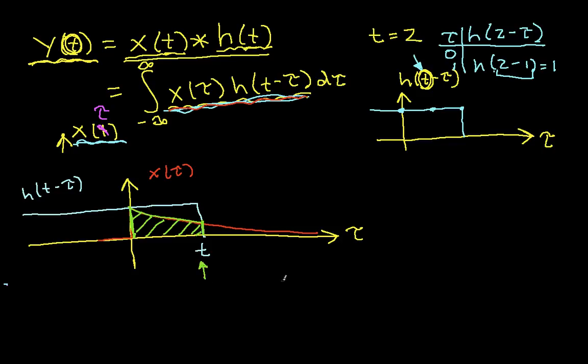For a different value of t, suppose I want to get y of, I'll call it t prime, but now I want to get y of t for a different value of t. Well, my h of t minus tau has changed. Now h of t minus tau looks like this. Now this would actually be h of t prime minus tau. And the product of x of tau and h of t prime minus tau looks like this. And the area, which is what I'm computing with the integral, looks like this.